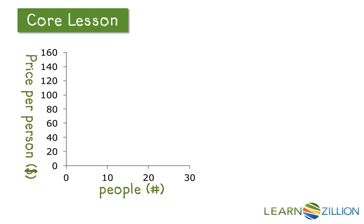Let's go ahead and put this into a graph. You'll notice I've scaled and labeled my axes. My input is the number of people, because changing the number of people is going to change the price per person. My output is price per person. People is a number and price per person is a dollar amount.